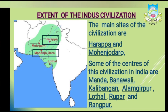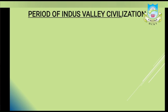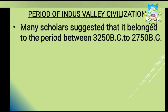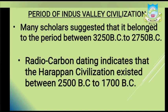Whenever we discuss a civilization, we need to know its time period. Historians often say that the Indus Valley civilization belonged to the period between 3250 BC to 2750 BC, where BC stands for Before Christ — the time period before the birth of Jesus Christ. But after radiocarbon dating, it was established that the Harappan civilization existed between 2500 BC to 1700 BC.